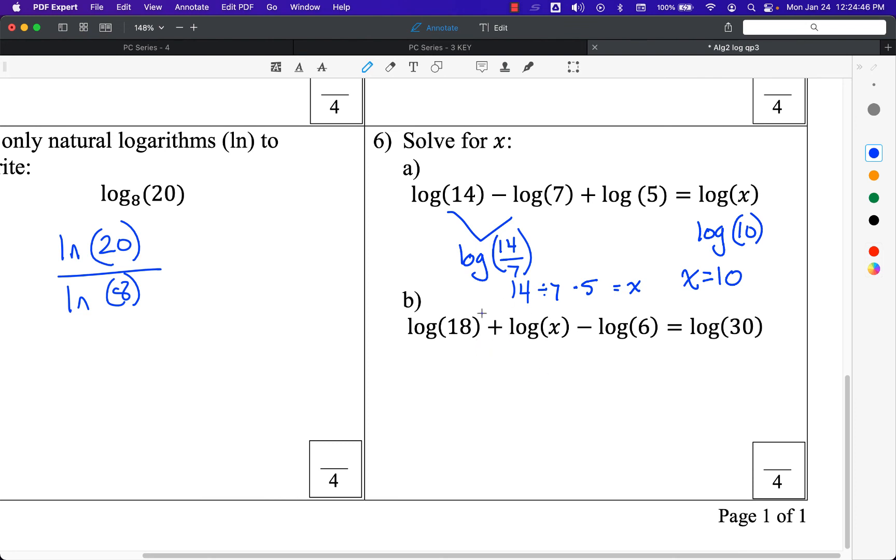Finally, we have this problem. I'm going to write it without the logarithms. It's really 18 times x divided by 6 equals 30. I'm changing our pluses into times, our minuses into dividing by, and equals to still equals. 18 times x divided by 6 is the same thing as 18x over 6. 18x divided by 6 is really 3x. This is 3x because 18 divided by 6 is 3. 3x equals 30. Divide both sides by 3, x equals 10. And that covers our practice quiz for Algebra 2. Thank you.